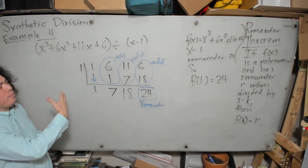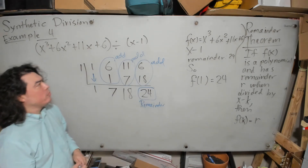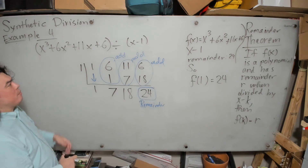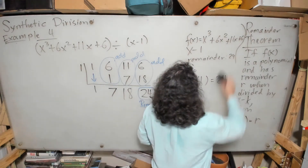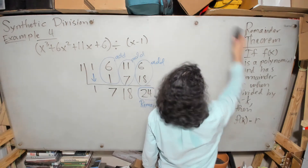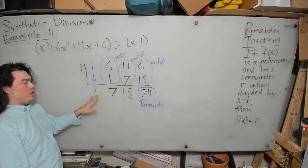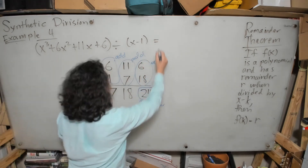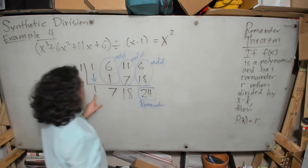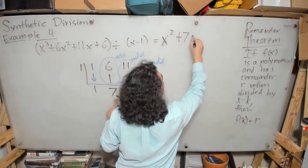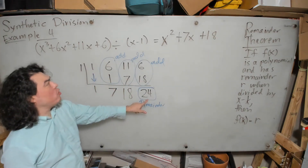Now I want to go back to the division interpretation. What is the implication of having a remainder of 24? Since we're dividing a cubic term by a linear term, the quotient corresponds to a square term. So the result is x squared plus 7x plus 18, with remainder 24 divided by x minus 1.